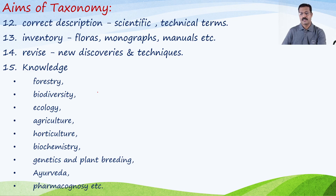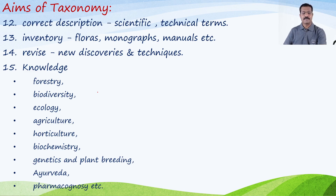Knowledge of taxonomy is useful in forestry, biodiversity, ecology, agriculture, horticulture, biochemistry, genetics, plant breeding, as well as Ayurveda and pharmacognosy. These are the aims of taxonomy.